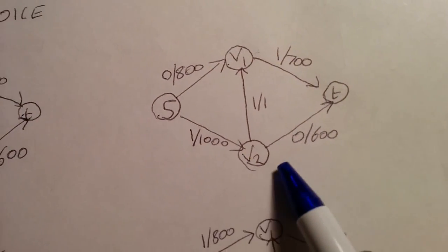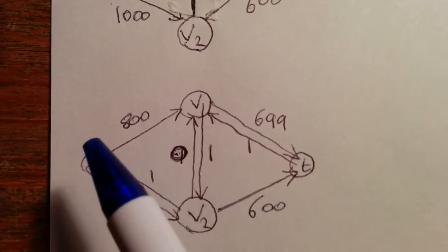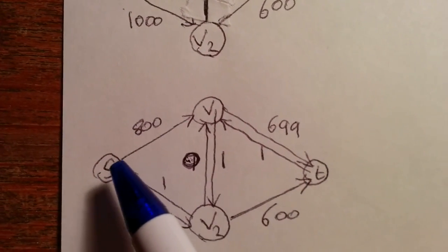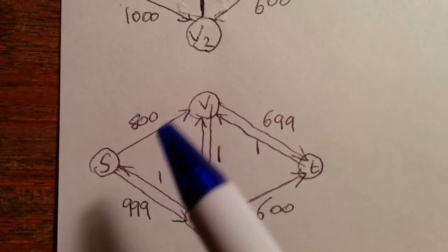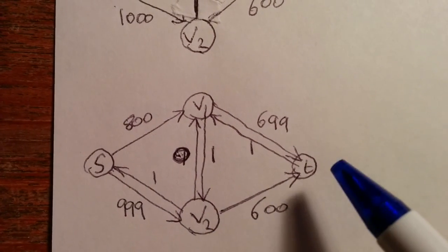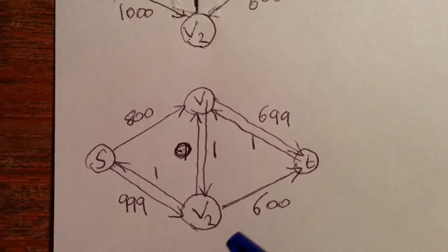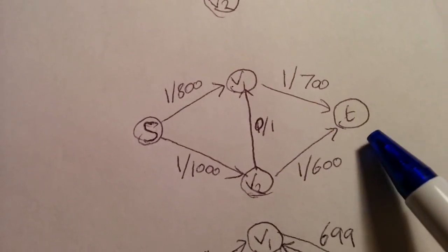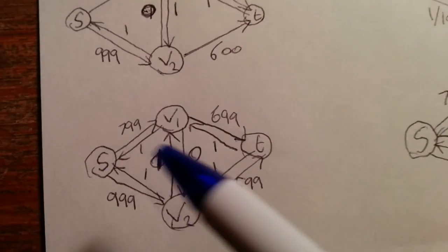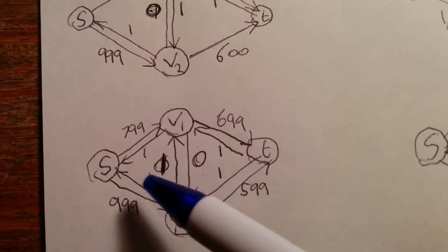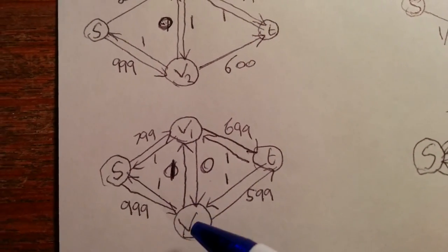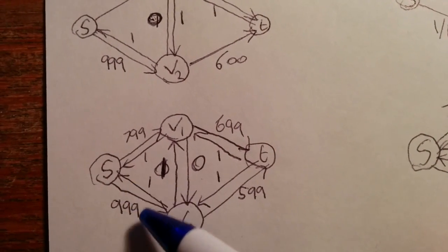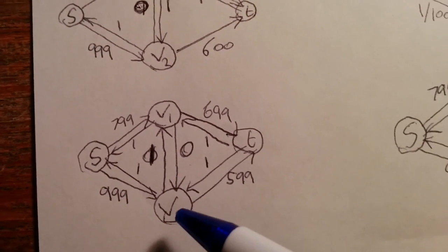And then we're back to the graph again. So we'll move on, and we'll push a value of 1 from S to V1, V1 to V2, and then V2 to T. And we can do this because of backflow, as mentioned earlier. And again, I've updated the residual network to show this. And then we're back to basically where we started, except with a bit of a lower value along S to V2 and V1 to T. So we're going to push a value of 1 from S to V2, V2 to V1, and then V1 to T.